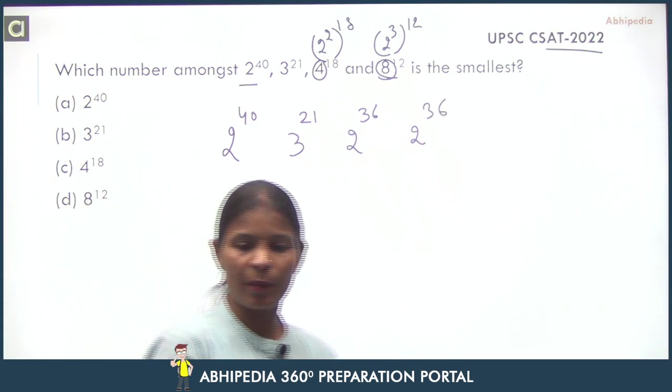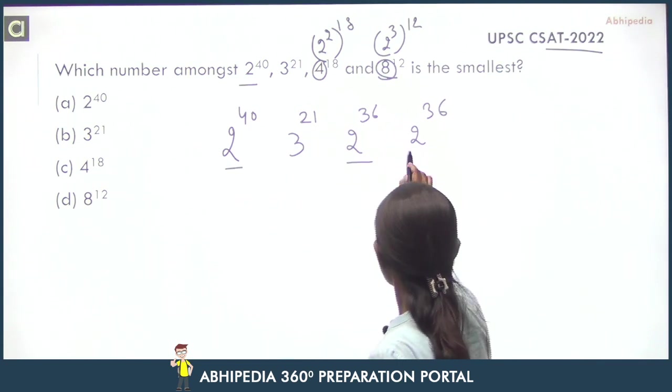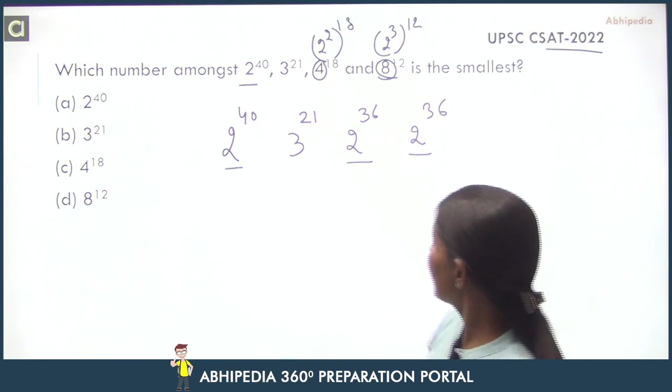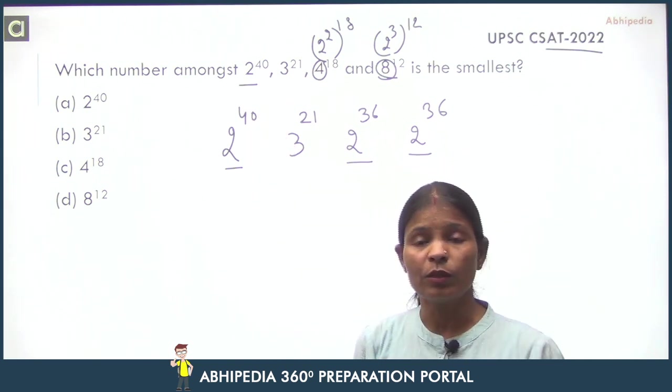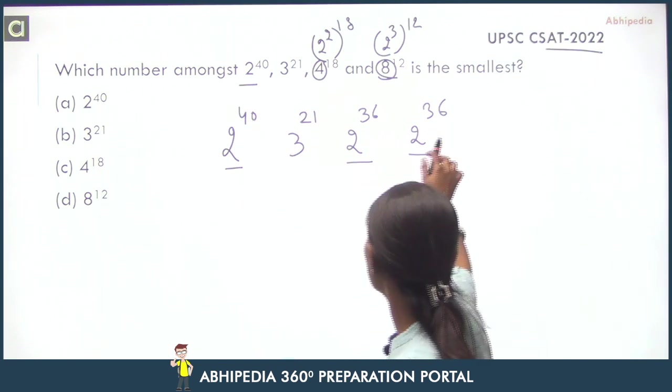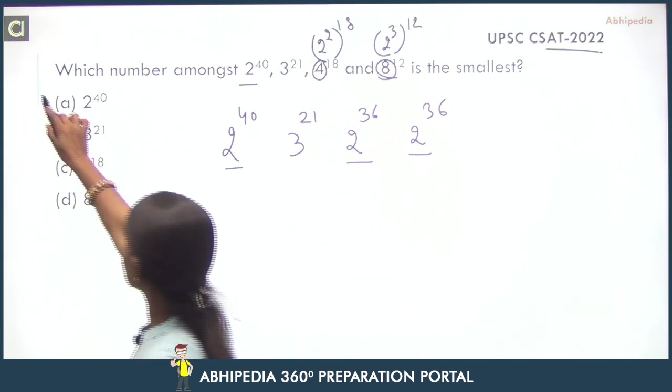Now see how easy. This is 3 to power 21 and here the power is 40. Obviously 2 raised to power 40 is more than 2 raised to power 36. That means this 2 raised to power 36 is not possible.